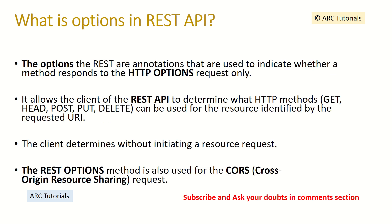What is OPTIONS in REST API? OPTIONS is an annotation used to indicate whether a method responds to the HTTP OPTIONS request. It allows the client of the REST API to determine what HTTP methods — such as GET, POST, PUT, DELETE — can be used for the resource, without initiating an actual resource request. The REST OPTIONS method is also used for cross-origin resource sharing requests. This is an important topic often asked in interviews.